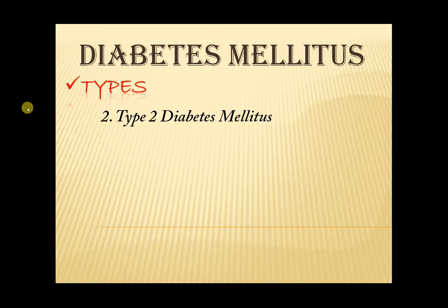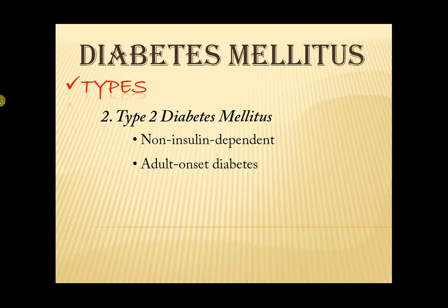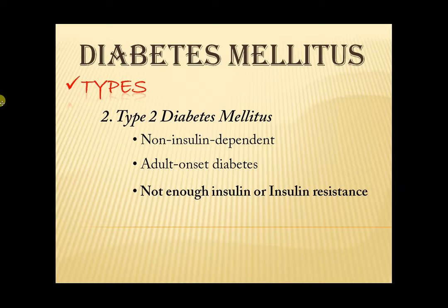Next, Type 2 Diabetes mellitus. It is a non-insulin-dependent and also called adult onset diabetes. In this type, the beta cells in the pancreas produce insulin but the problem is either it is not enough or the body doesn't use it like it should be. This is what we call insulin resistance. It is when your cells don't respond to insulin and it usually happens in fat, liver, and muscle cells. Obesity often causes insulin resistance. So your pancreas has to work harder to make more insulin but it is still not enough to keep your blood sugar levels where they should be. It is the most common form of diabetes in people who are over 40 years of age but can occur even in childhood if there are risk factors present.